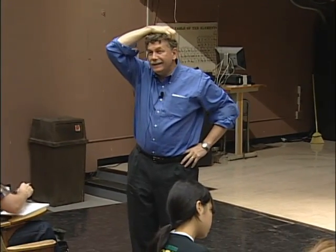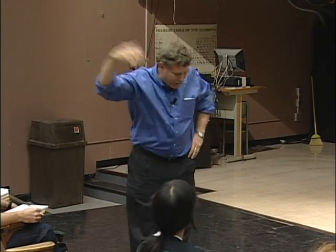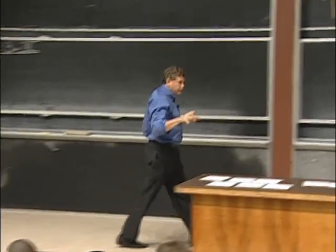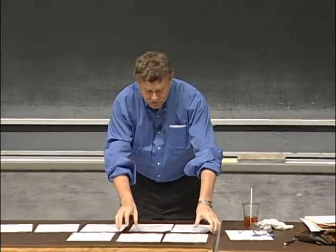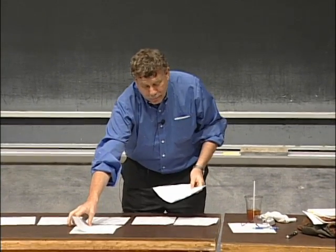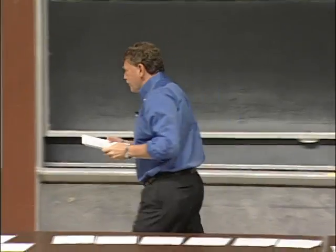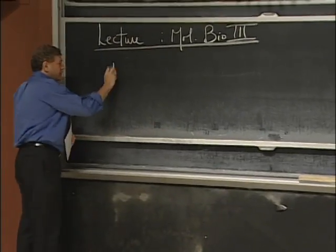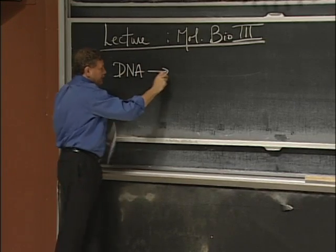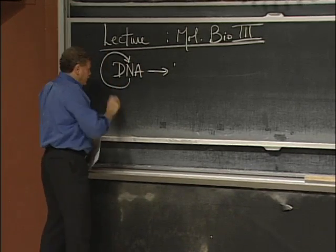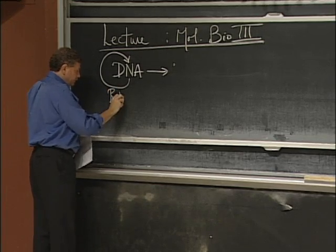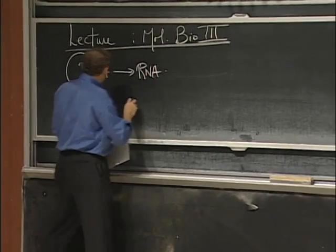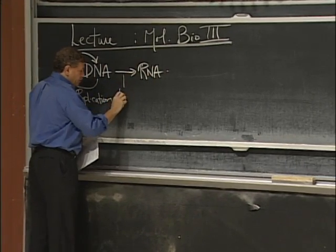Good morning. Come on down. All right, so last time we talked about the first couple of steps of the central dogma. The central dogma is the name given to the statement: DNA goes to DNA by replication, DNA goes to RNA by the process of transcription.